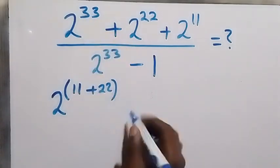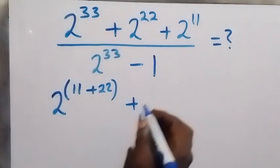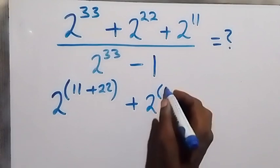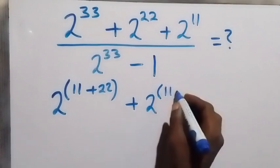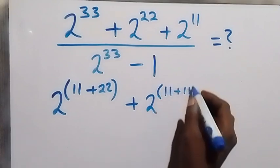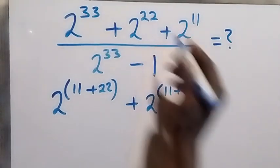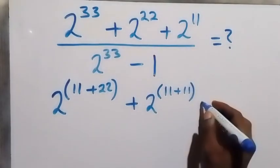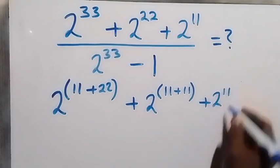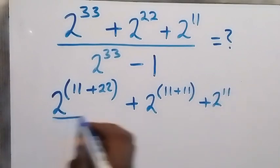That's still 2 raised to power 33, then plus here we have 2 raised to power 11 plus 11, that's still giving us 2 raised to power 22, then plus 2 raised to power 11, which is divided by...